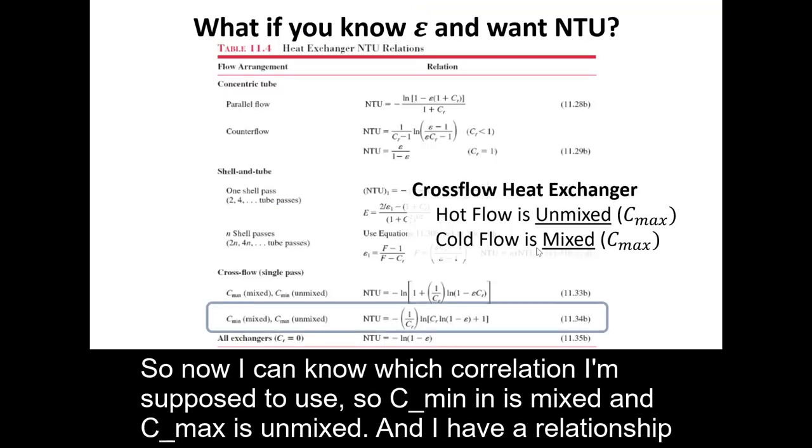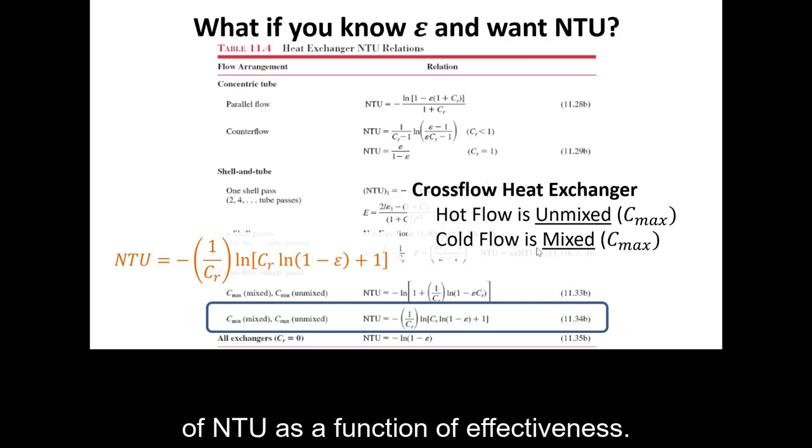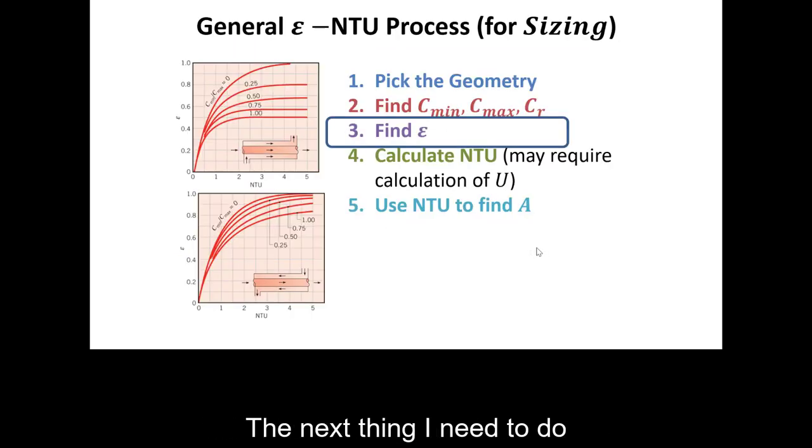So now I can know which correlation I'm supposed to use. So C min is mixed and C max is unmixed. And I have a relationship of NTU as a function of effectiveness. In this case, I know C R already, but I don't know the effectiveness. So the next thing I need to do is find effectiveness.